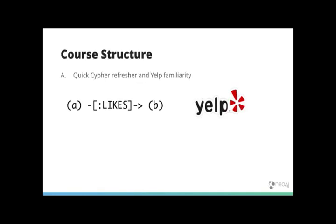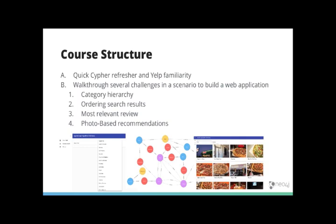This course, we'll start with a quick cipher refresher and a few exercises to get you familiar with the Yelp data itself. We'll then walk through several challenges in a scenario about building a web application. We'll look at a category hierarchy, and we'll use overlap similarity for that.